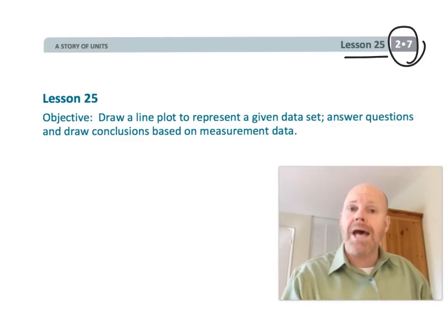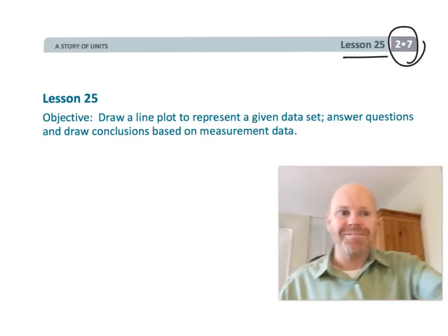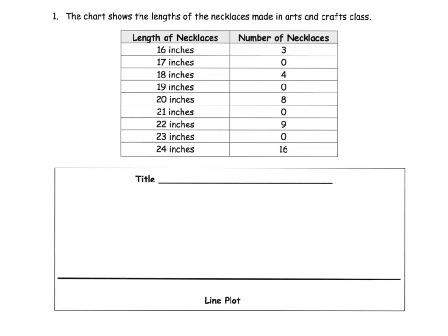Let's get started. We have a chart here that shows the length of necklaces that students made in arts and crafts. You can see that 16 inch necklaces, three people made a necklace that length, and all the way down to a really long 24 inch necklace. We can see that 16 people made that one because they were really trying to make a long necklace. Here is the line plot area where we're going to be making our line plot.